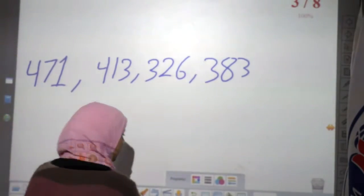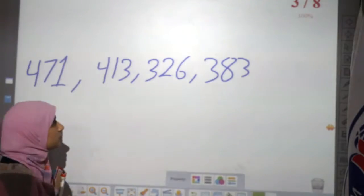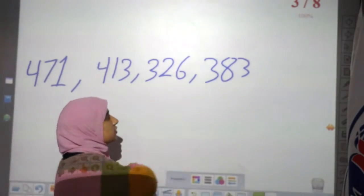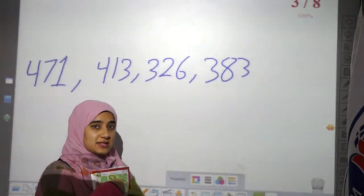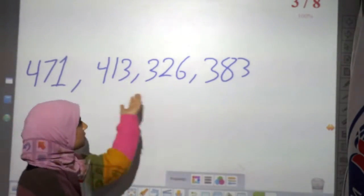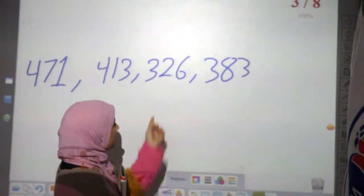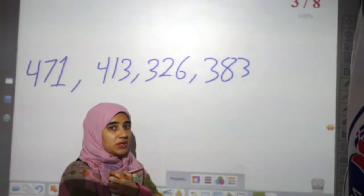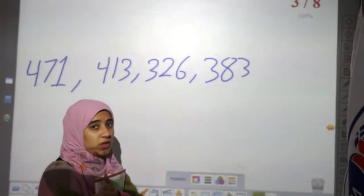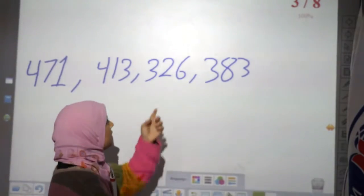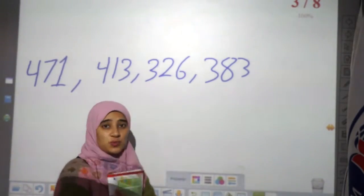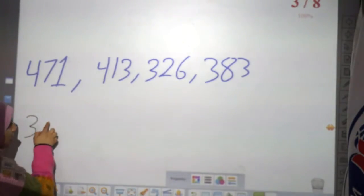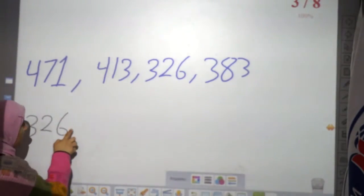Okay, where is the small number? Here 400 and here 400, but here 300 — so the small one is 300. Which one is more small, this or this? Here 300 and here 300, so I go to the tens. Here 20 and here 80 — where is the small? Excellent, 326 is the small one.